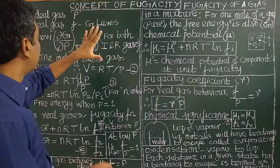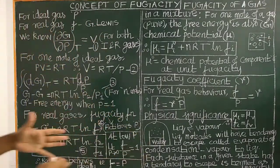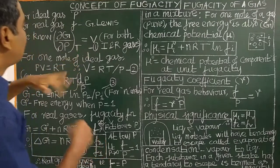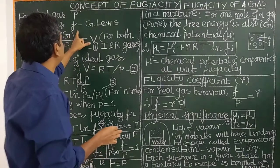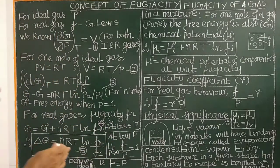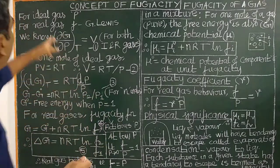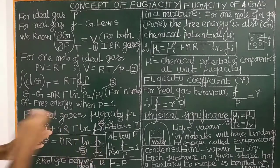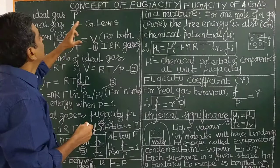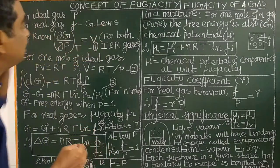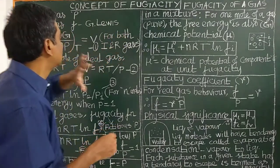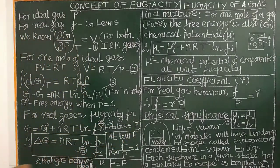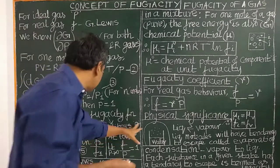For ideal gas, P is the pressure of an ideal gas. For real gas, the pressure is replaced by fugacity. There is a deviation from ideal gas behavior — real gas deviates from ideal gas behavior. The term fugacity was introduced by G. Lewis. It is called a fictitious pressure. Fugacity is nothing but fictitious pressure.